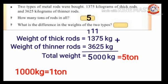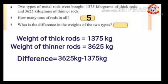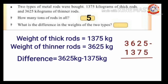Next question: what is the difference in the weight of the two types? Thick rods: 1375 kg; thinner rods: 3625 kg. To find the difference, subtract 1375 from 3625. 5 minus 5 is 0. Can't subtract 7 from 2, so borrow 1 from 6 — 2 becomes 12, 6 becomes 5. 12 minus 7 is 5, 5 minus 3 is 2, 3 minus 1 is 2.